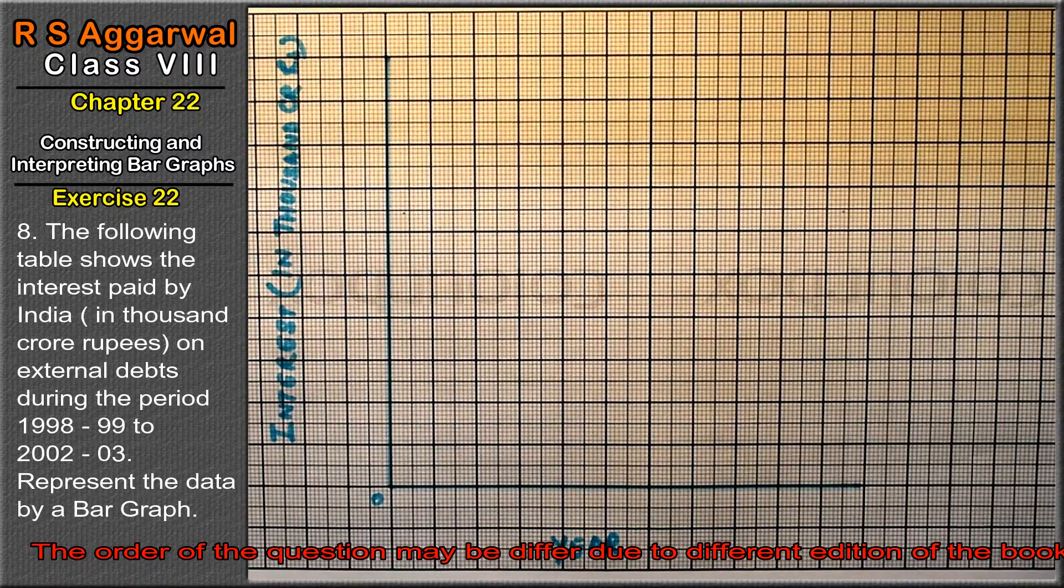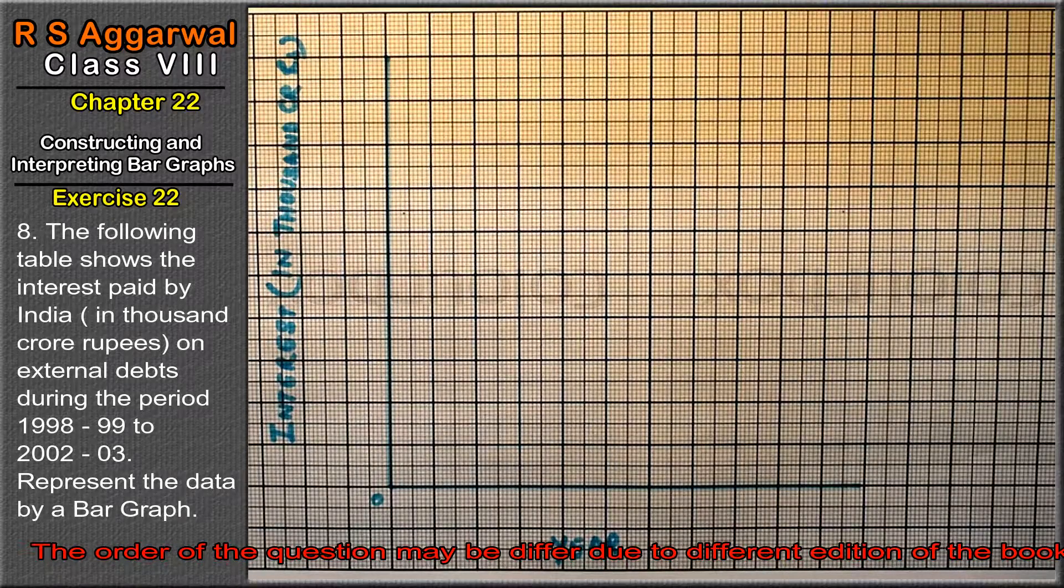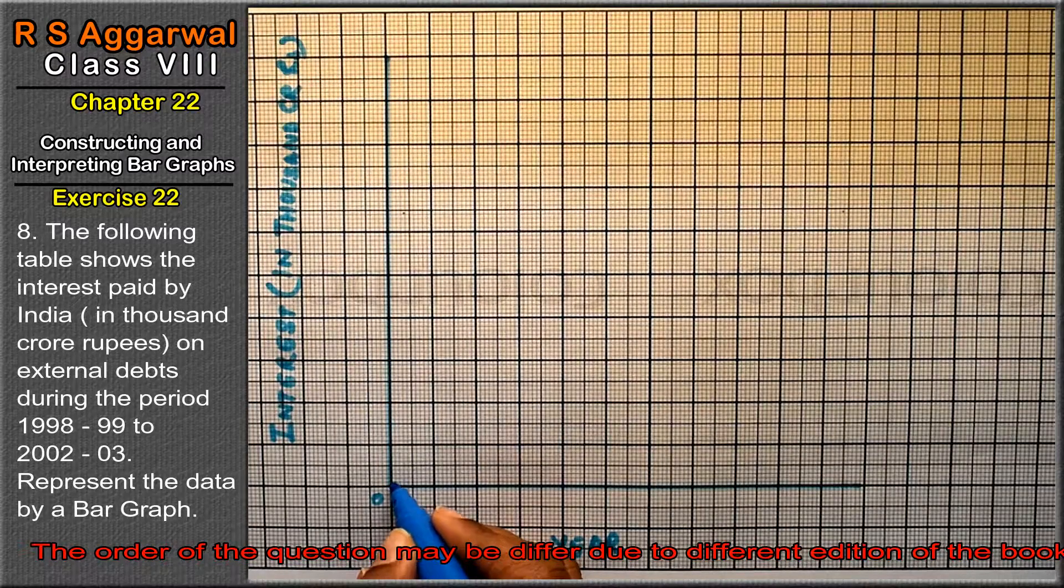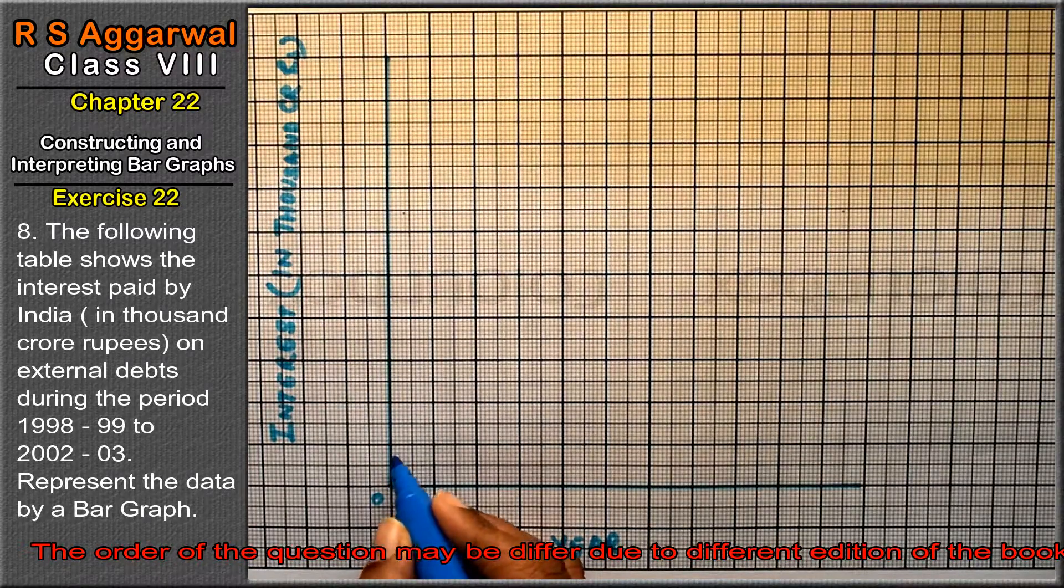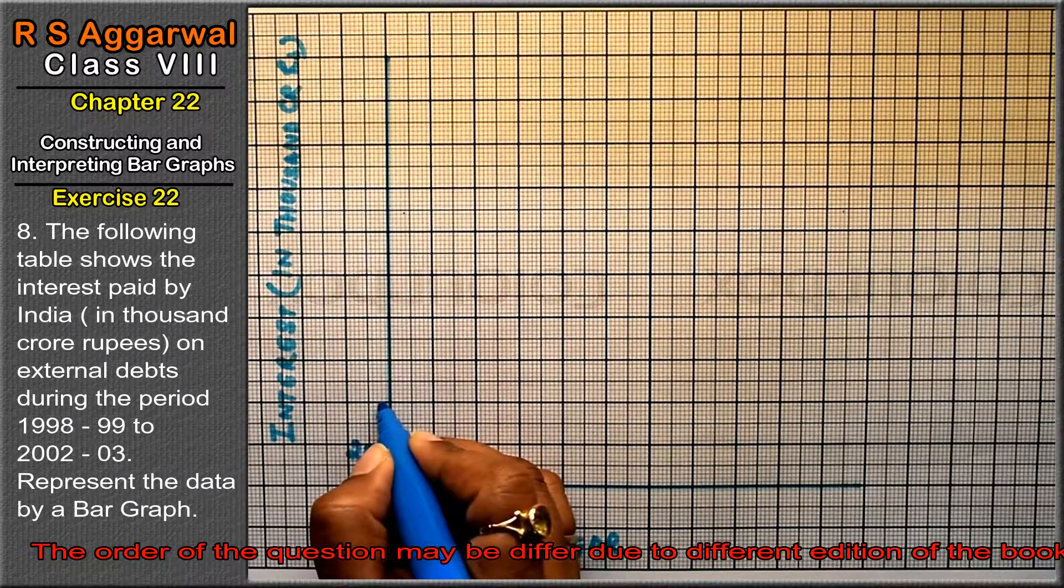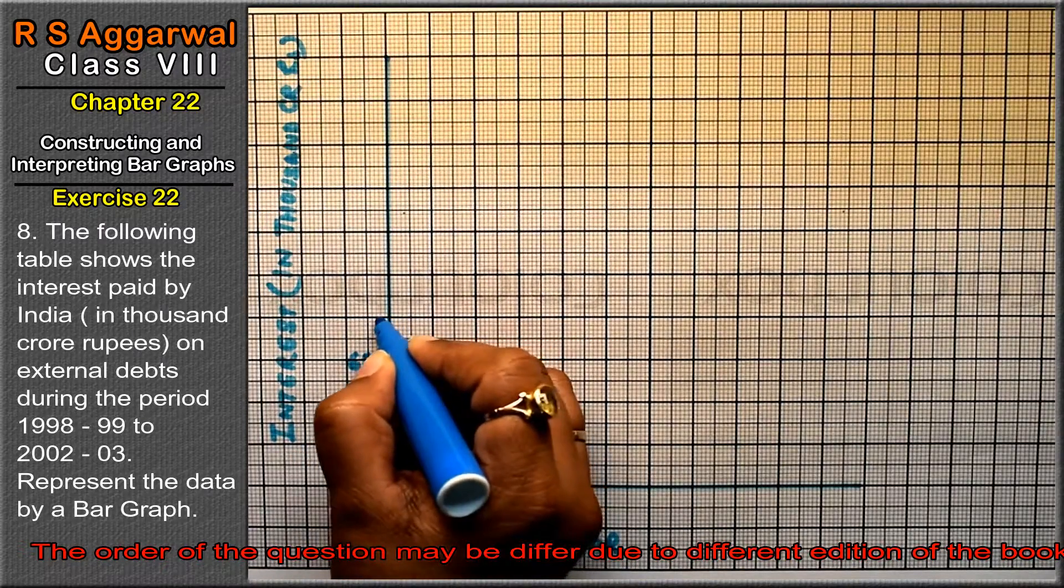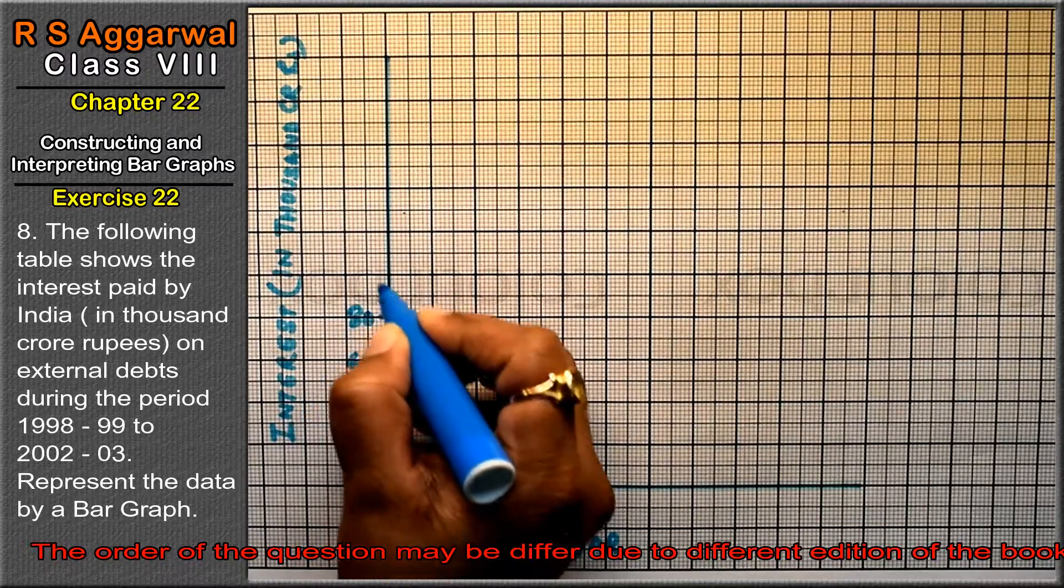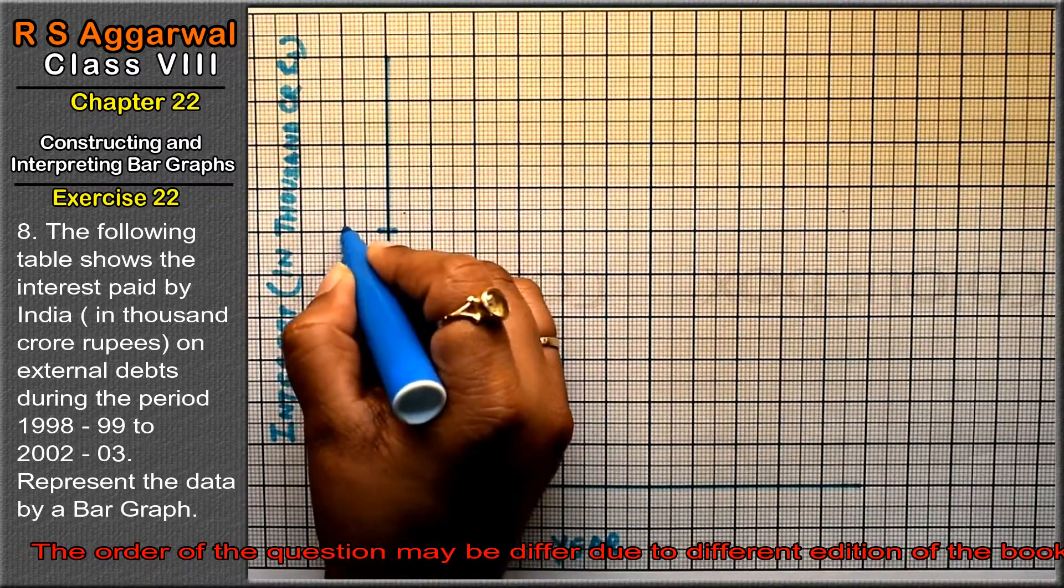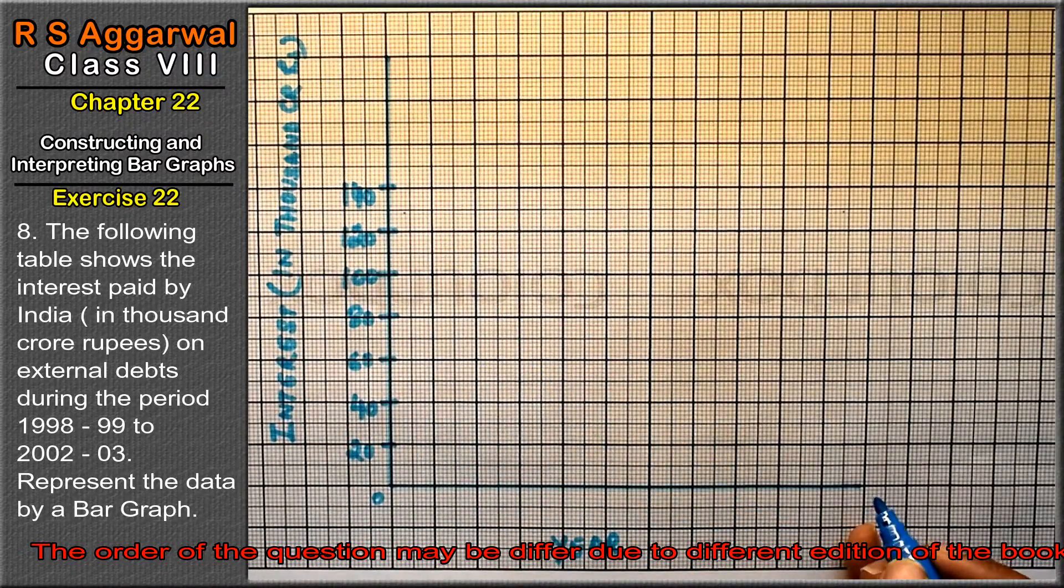Now, as it is from 1998 to 1999, it just starts from 1999, so this is an important question. This small division is 2, so we have 10, 20, 40, 60, 80, 100, 120, 140.